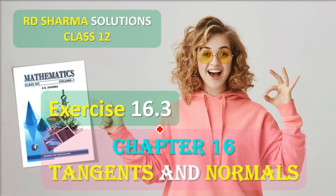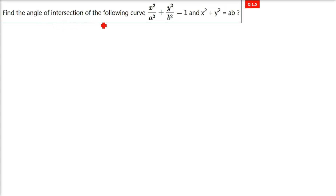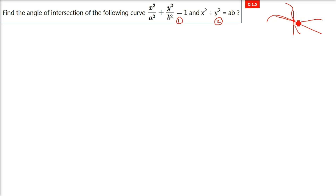This is Sadi Sharma solution class 12, Exercise 16.3, taken from Chapter 16: Tangents and Normals. We are finding the angle of intersection of the following curves. There are two curves that will intersect at one or multiple points. We will draw tangents at the cutting point on each curve, and the angle between these two tangents will be the angle of intersection between the curves.